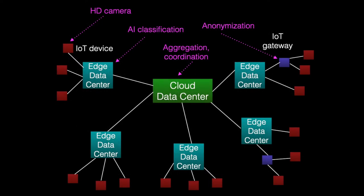Here's one example of a use case for edge computing. Suppose you have a large number of cameras distributed across multiple sites, and you'd like to do classification using artificial intelligence. With edge computing, you could run the AI workloads near the cameras, near the sensors, and the IoT devices, and offload that computation so data doesn't all have to be transferred to the cloud data center.